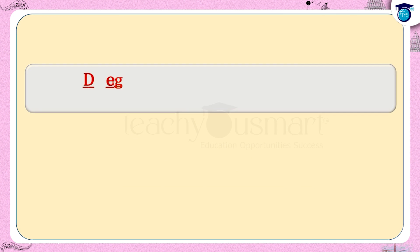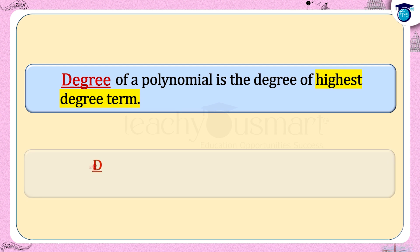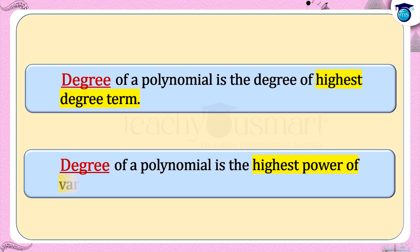Therefore, the degree of the polynomial 2x² + 3x + 4 is 2. Hence, the degree of a polynomial is the degree of the highest degree term — that is, the highest power of the variable in the polynomial.